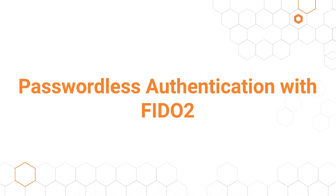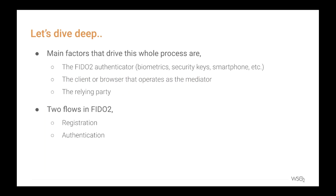Let's look at how FIDO2 uses asymmetric cryptography to authenticate users in a passwordless manner. There are three main factors that drive this whole process. First, the FIDO2 authenticator — which can be biometrics, security keys like YubiKey, smartphones, USB tokens, Apple's Touch ID, or Windows Hello. Second, the client or browser, which operates as the mediator. Third, the relying party — for example, WSO2 Identity Server. Utilizing all these factors, there are two main flows: the registration flow and the authentication flow.